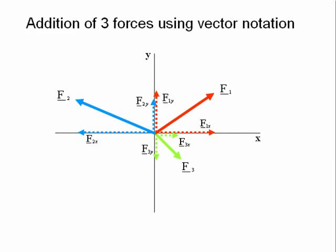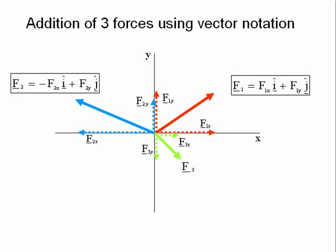Using vector notation, the three forces are written as F1 equals F1xi plus F1yj, F2 equals minus F2xi plus F2yj, and F3 equals F3xi minus F3yj.